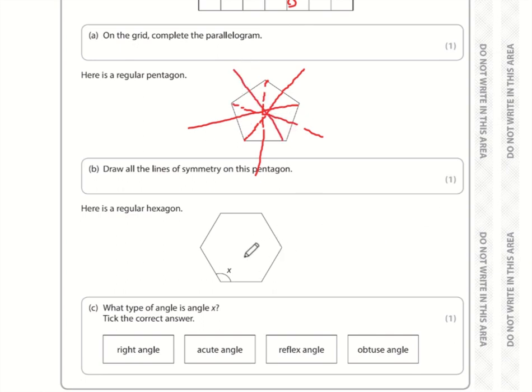Here is a regular hexagon. What type of angle is angle X? We can see that this is more than a right angle. If it's bigger than a right angle, it will be an obtuse angle. It's an obtuse angle because it's between 90 and 180. If it was greater than 180, it would be reflex.